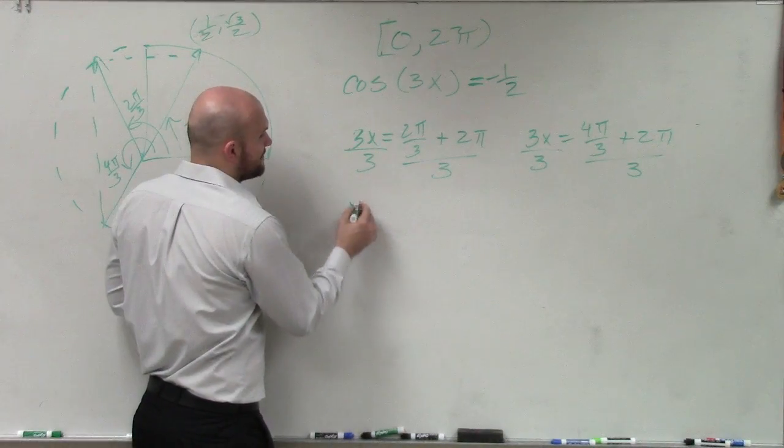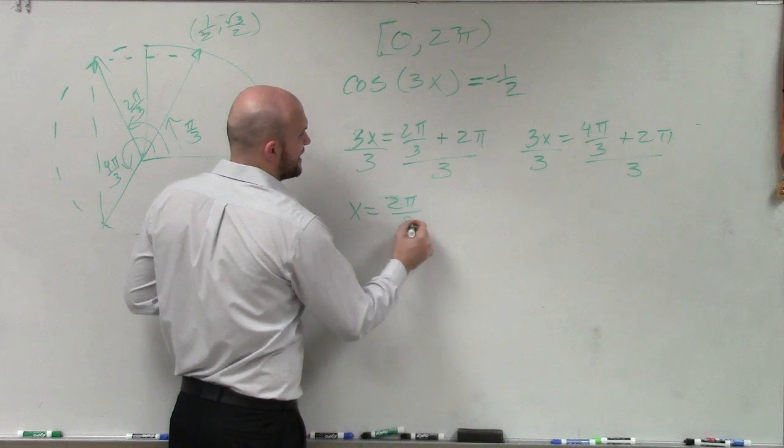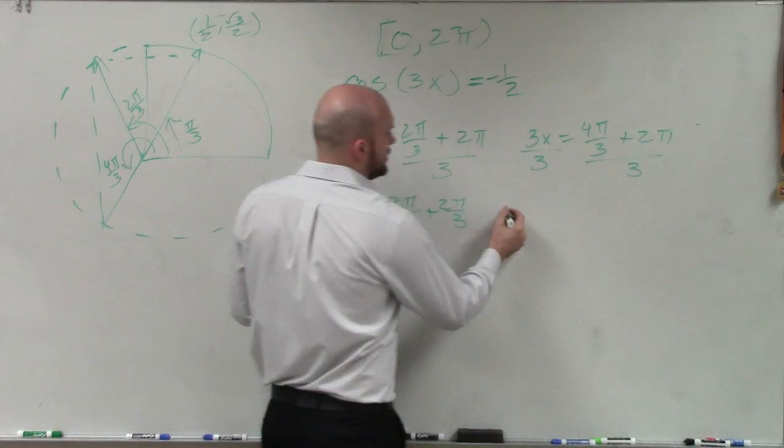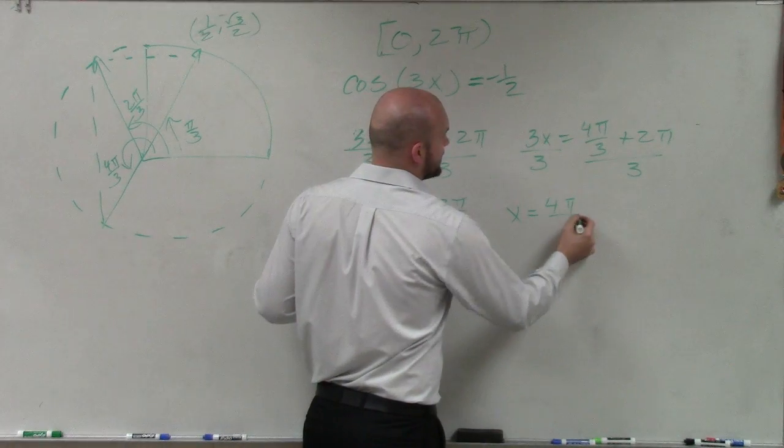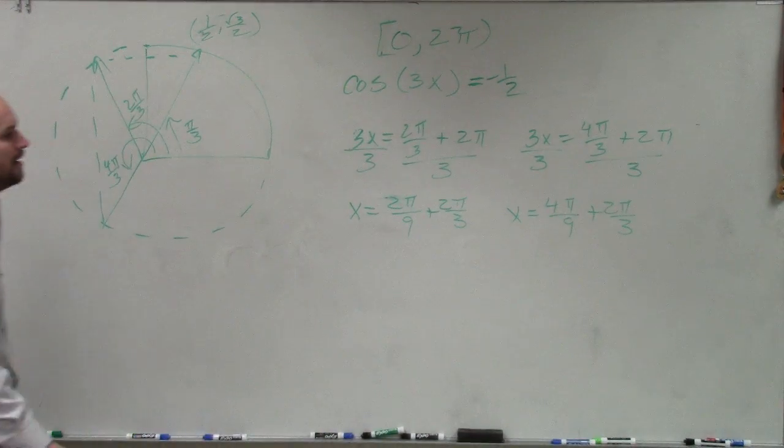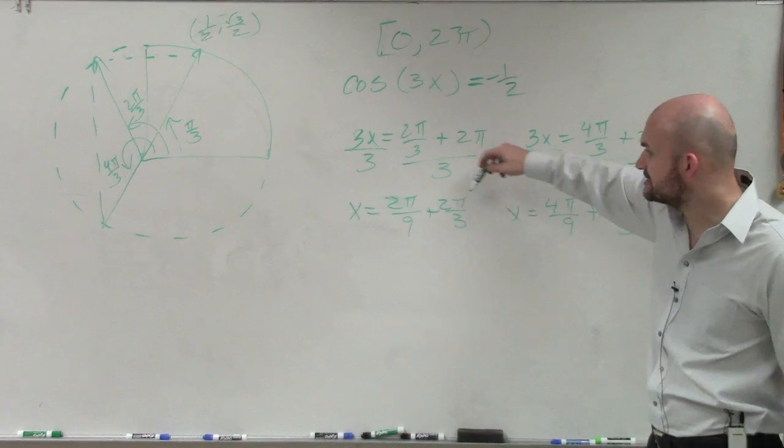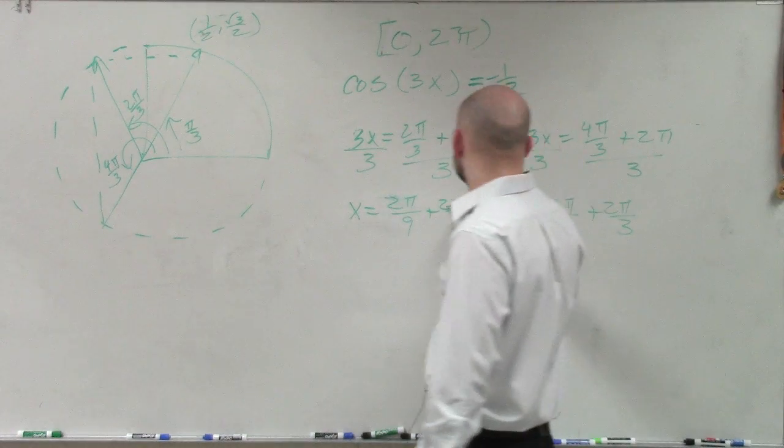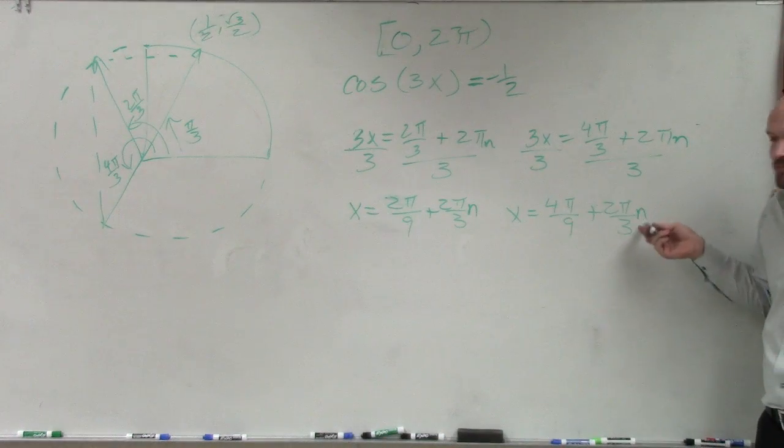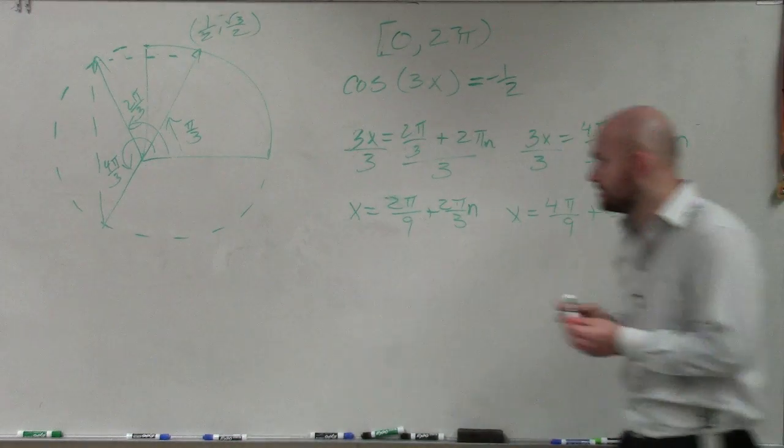Because when I do this, I now have x equals 2π divided by 9 plus 2π over 3. Here I have x equals 4π over 9 plus 2π over 3. And what I want to be able to show you is can we add certain, can we still add, I'm sorry, that's n, right? Can we add variables of 2πn to our solution and it still be between 0 and 2π?